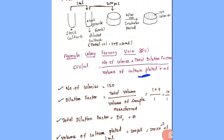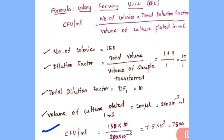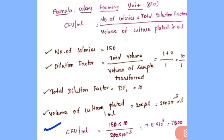The volume of culture plated is the amount of sample spread onto the agar plate, which is 200 microlitres. This must be converted to ml: 200 microlitres equals 200 times 10 to the power of minus 3 ml. So, CFU per ml equals 150 multiplied by 10, divided by 200 times 10 to the power of minus 3.